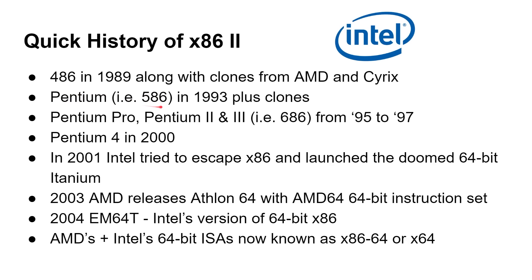We have the Pentium rather than 586 because these all had clones as well. Then we have the Pentium Pro, the Pentium 2, the Pentium 3 — that's the 686, from 1995 to 1997 — and then finally the Pentium 4 in the year 2000. Now in 2001, Intel tried to escape from the heritage of x86 because it wanted to go to 64-bit, so it launched the Itanium, which ultimately was doomed — it didn't succeed because it wasn't backward compatible with x86.